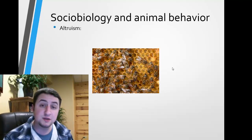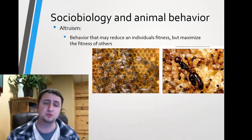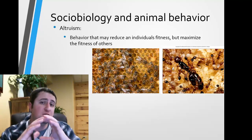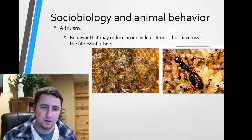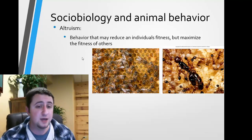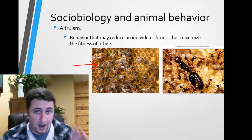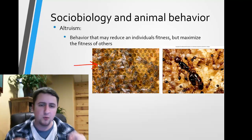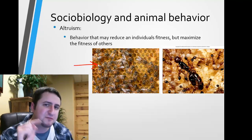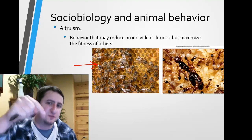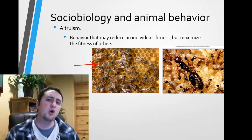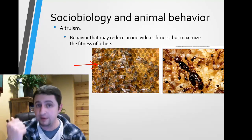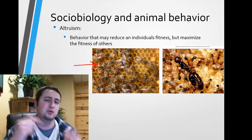With societies comes this behavior called altruism — where certain behaviors in individuals may actually reduce their own fitness, but for the whole species as a whole, it increases fitness. One species that practices altruism a lot is bees. If you go up to a beehive and disturb it, those bees are going to get angry and sting you. But if a bee stings you, the bee dies — so the bee sacrificed itself, reducing its own fitness. But as a whole bee population, it actually increased their fitness, because you got stung and ran away, allowing the rest of the bees to survive.